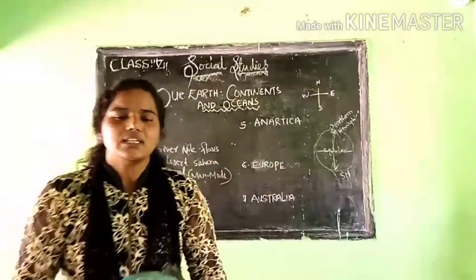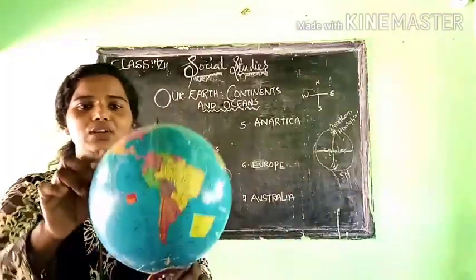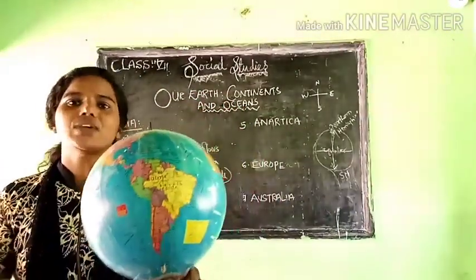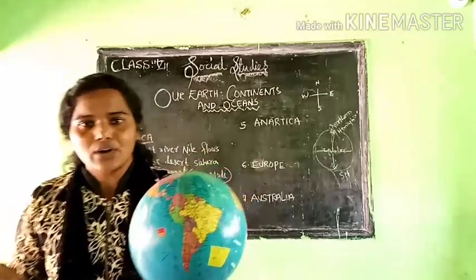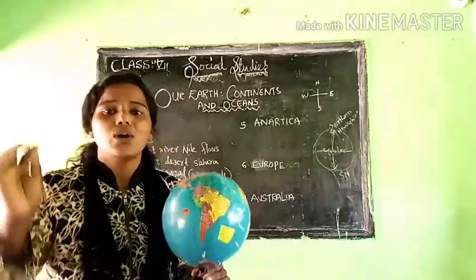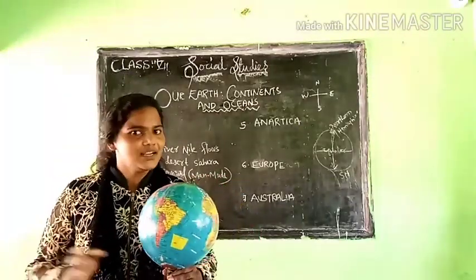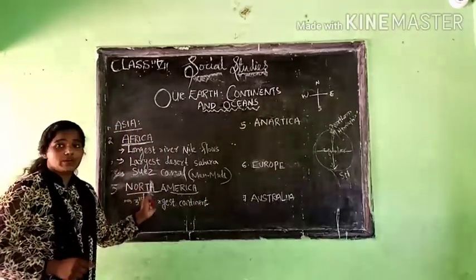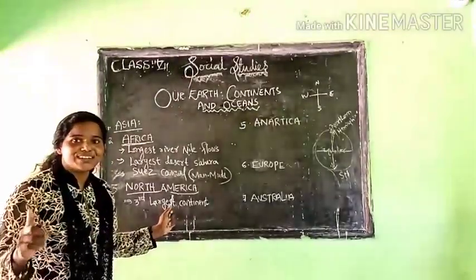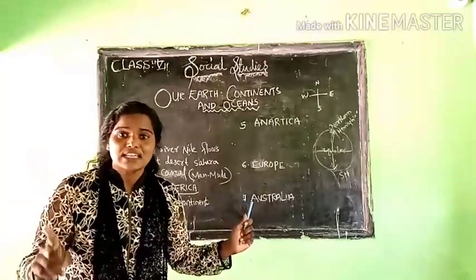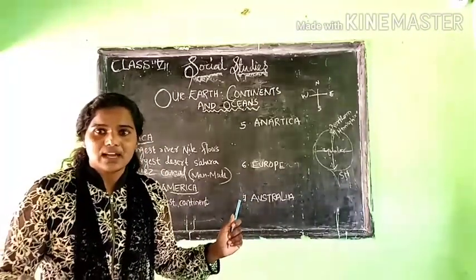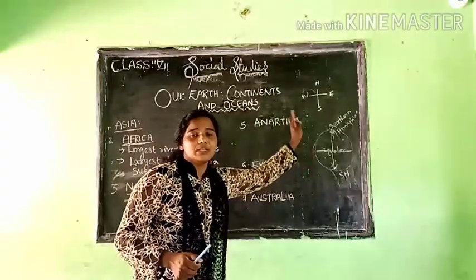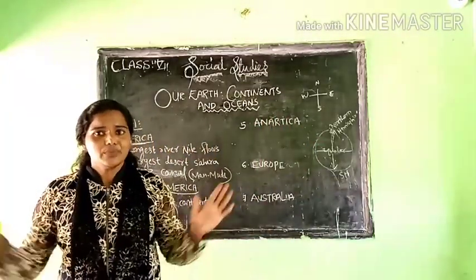Where is the North American continent? It is above the equator, so the North American continent is in the Northern Hemisphere. North America is the third largest continent, and Christopher Columbus, the Italian explorer, discovered it. North America is situated in the Northern Hemisphere of the globe.